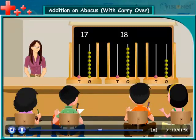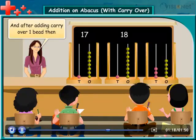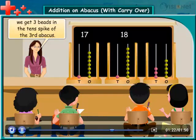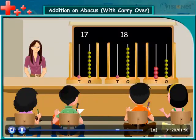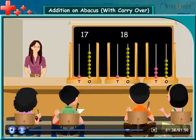Both of these have 1 plus 1, which is equal to 2 beads in total. And after adding the carryover of 1 bead, we get 3 beads in the tens spike of the third abacus. Now we get 5 beads in the ones spike and 3 beads in the tens spike of the third abacus.